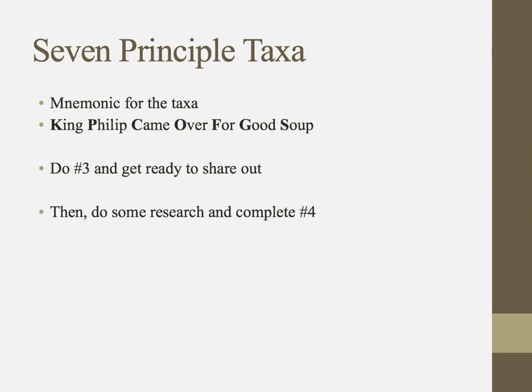Some people like to use mnemonics for these. I just remember them: kingdom, phylum, class, order, family, genus, species. Others like to use something like "King Philip came over for good soup" — for kingdom, phylum, class, order, family, genus, species. Hopefully you can come up with one on your own.